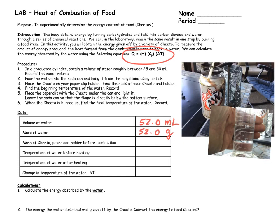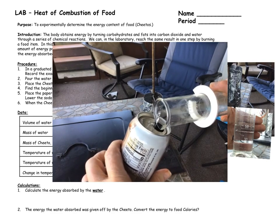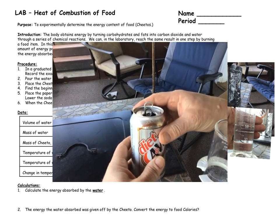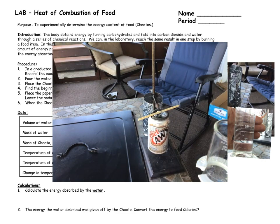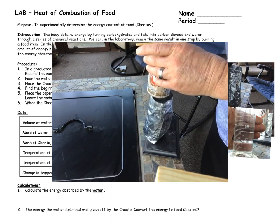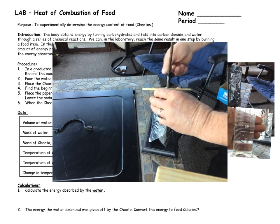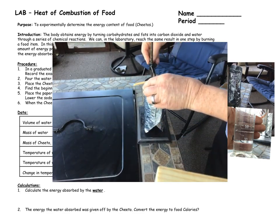Once we burn the Cheeto, it's going to warm up that water and the temperature will change. Let's pour it into our calorimeter, then put it on to the stand. We're going to burn the Cheeto underneath the can, lift it up, and set it right under there.